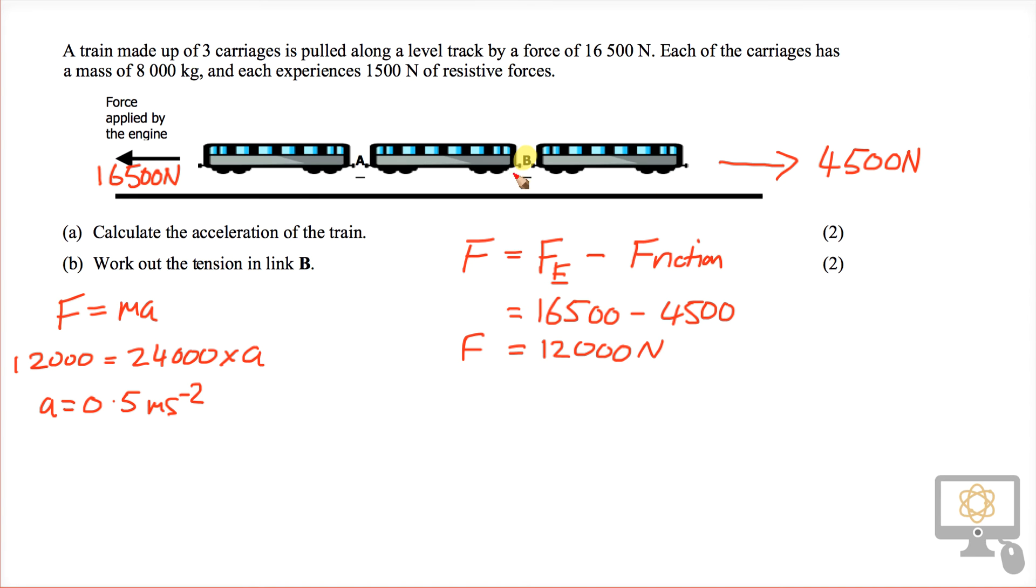Looking at the system as a whole as one complete block. But now we're going to look at the tension in link B. I'll just change color to blue to do part B. In part B we need to figure out the tension in link B, so we need to focus on this carriage alone and think about the forces acting on it. There are two forces.